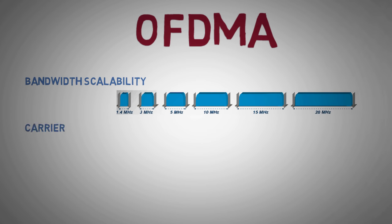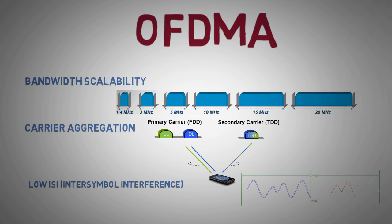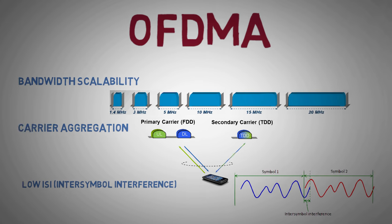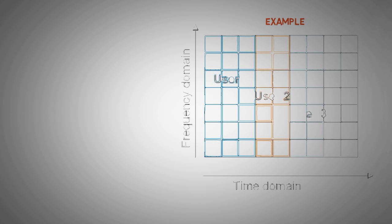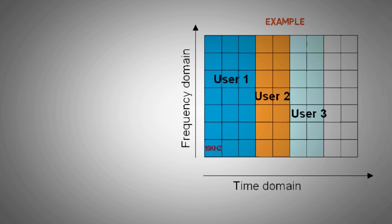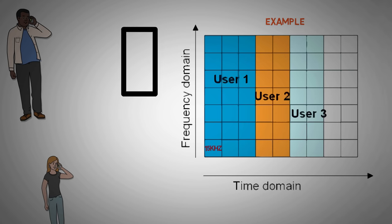OFDMA uses orthogonal subcarriers equally spaced at 15 kHz. Users are provided a subset of these subcarriers for data transmission.